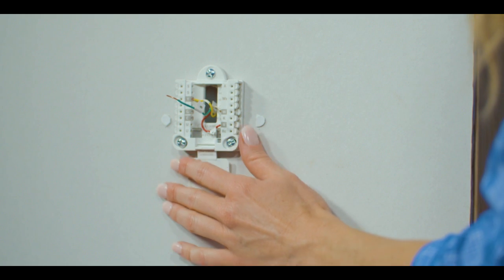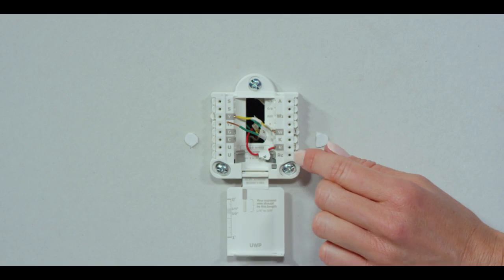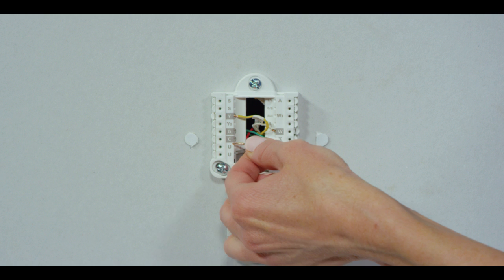Once you've installed the backplate of your new thermostat onto the wall, connect your labeled wires to the proper terminals and connect the G wire to the C terminal of your new thermostat.